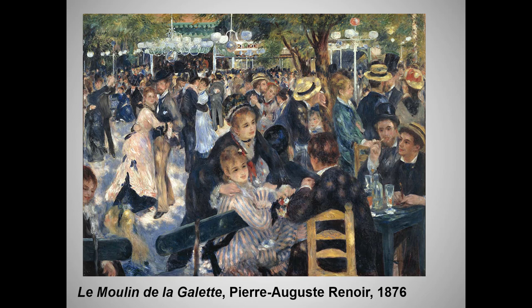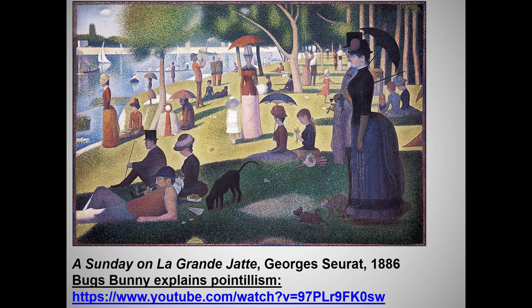The other problem some post-impressionists had with impressionist paintings was that their content was, quote, insignificant. Renoir was not trying to convey a deep message. Post-impressionists, and even more artists from later schools, felt that painting should address important eternal concepts. We've already seen how Van Gogh imbued his sower with a deeper symbolic significance. Now let's turn to a closer look at the four post-impressionist painters.